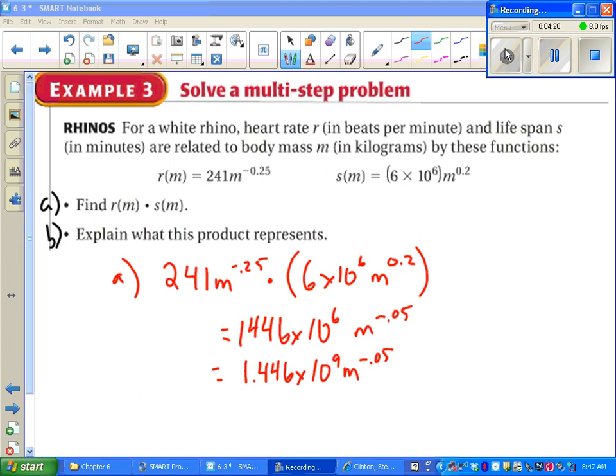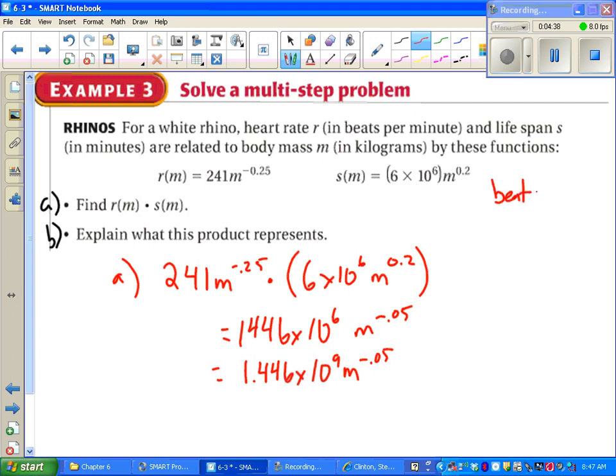Notice when I got that 1446 times 10 to the sixth, I decided to go one step further and make it look like it's in scientific notation, instead of kind of being in scientific notation. All that's left is explaining what this product represents. Our R of M is beats per minute. We're multiplying that by S of M which is units in minutes. Minutes cancel out. That tells us that this formula gives us the total number of beats, heartbeats of a rhino based on its body mass. That's it.